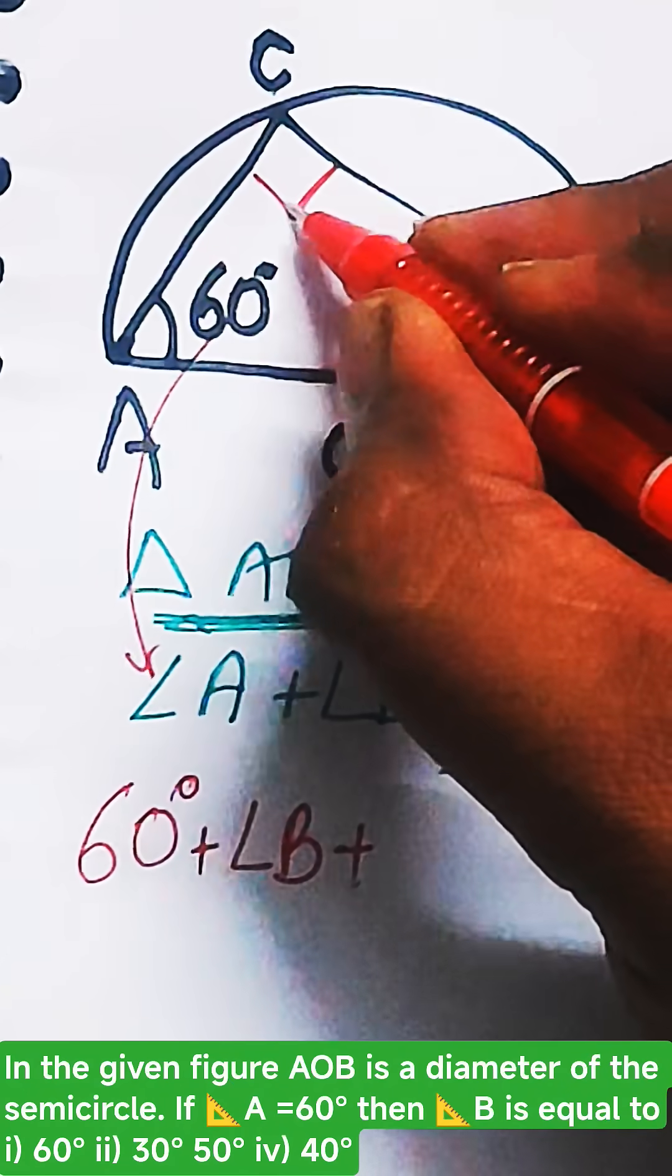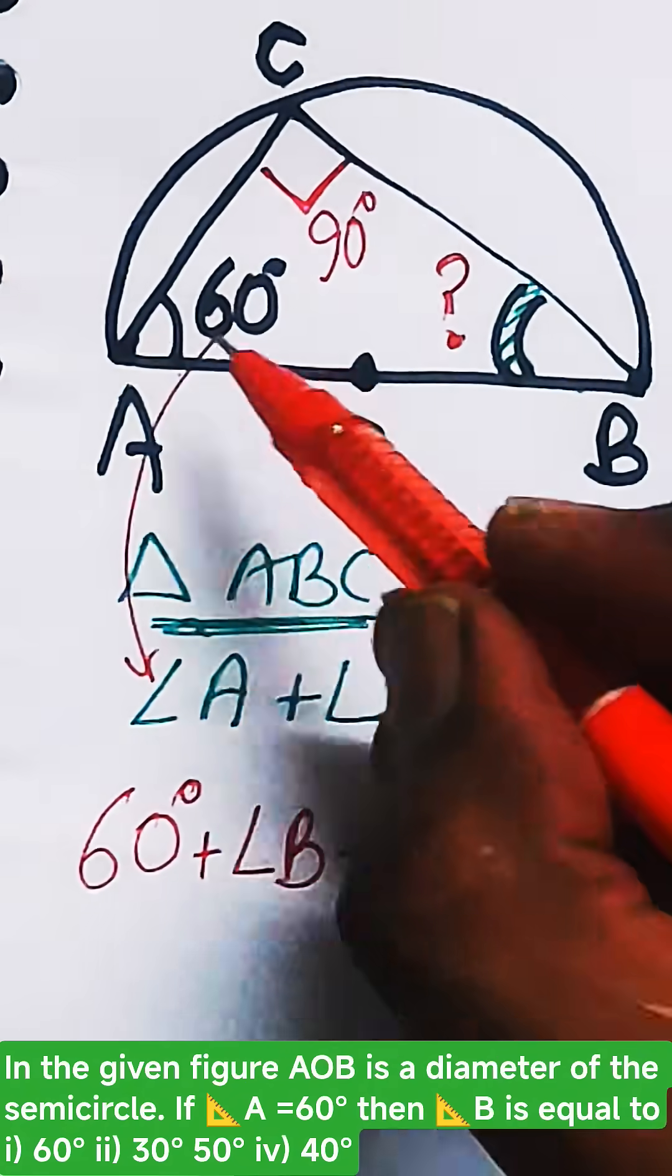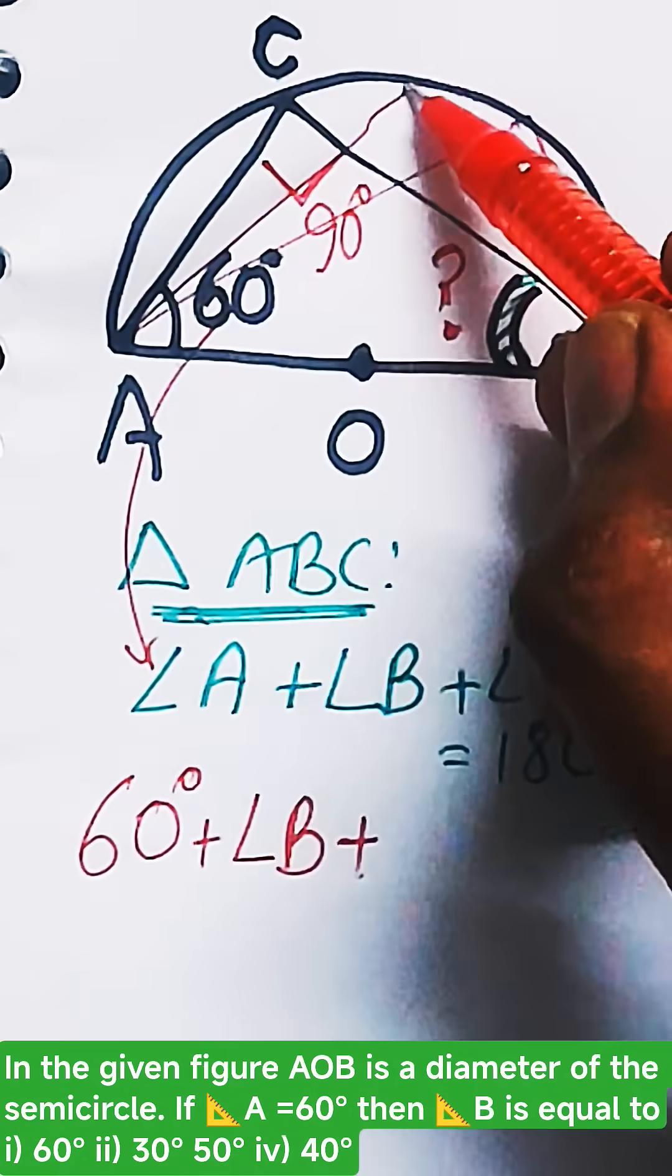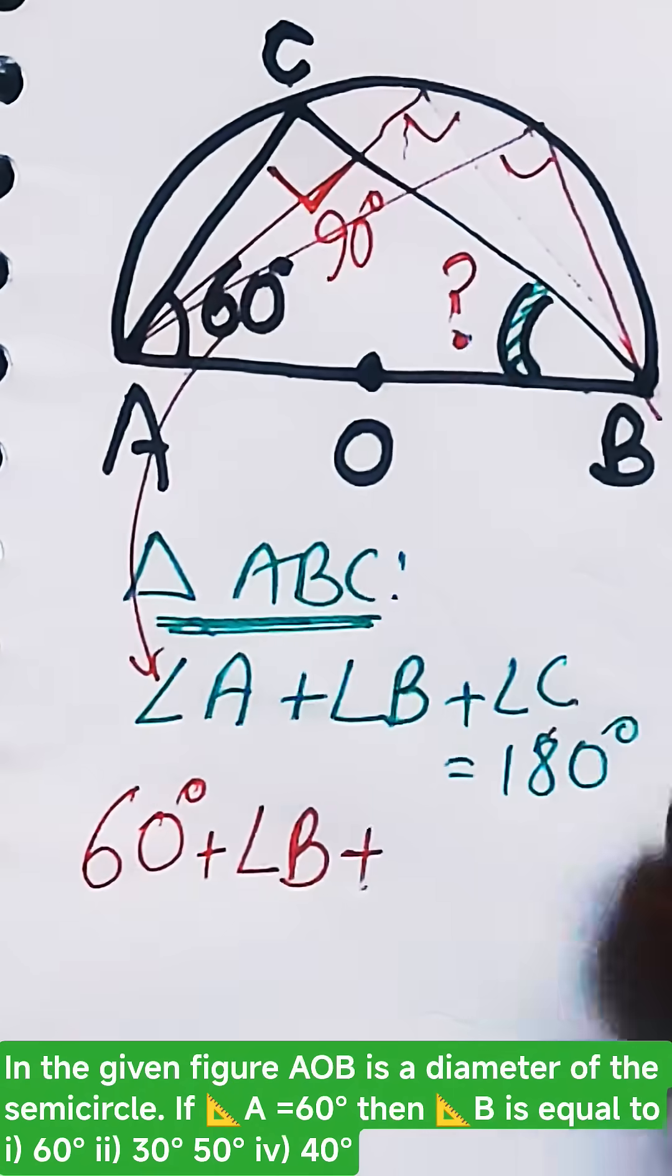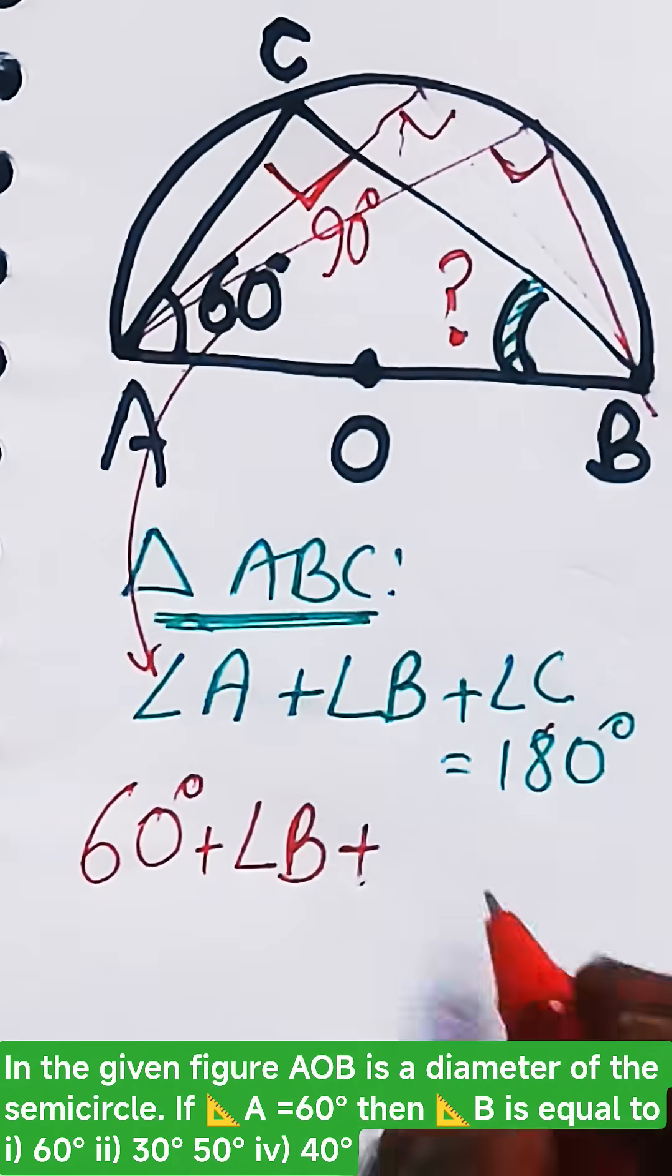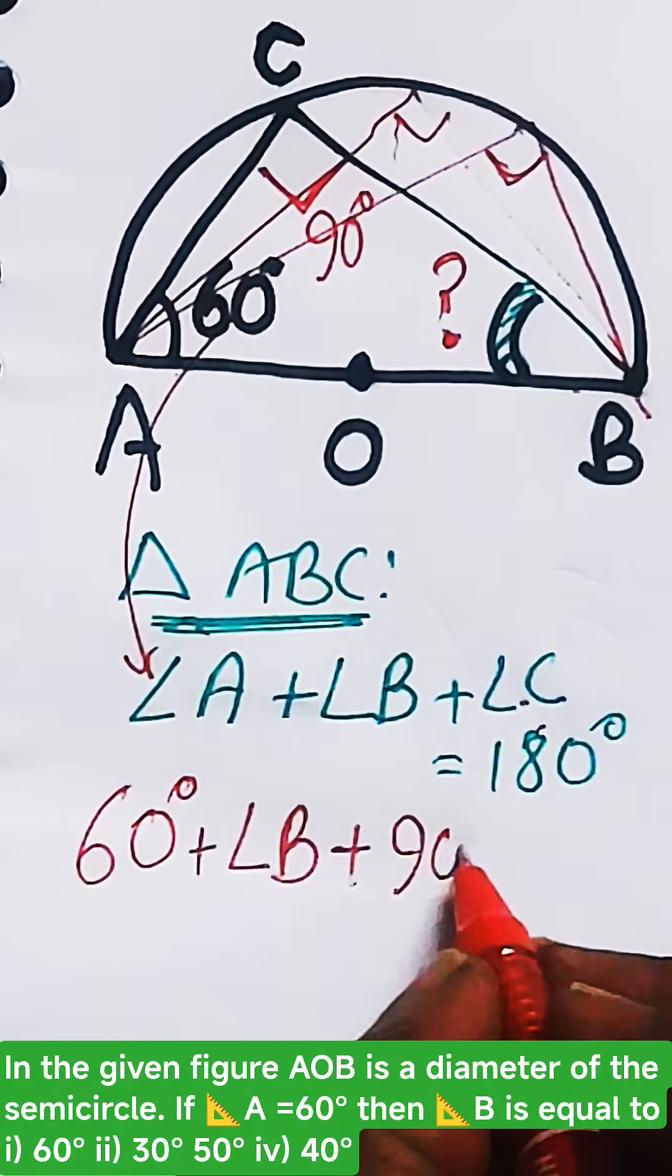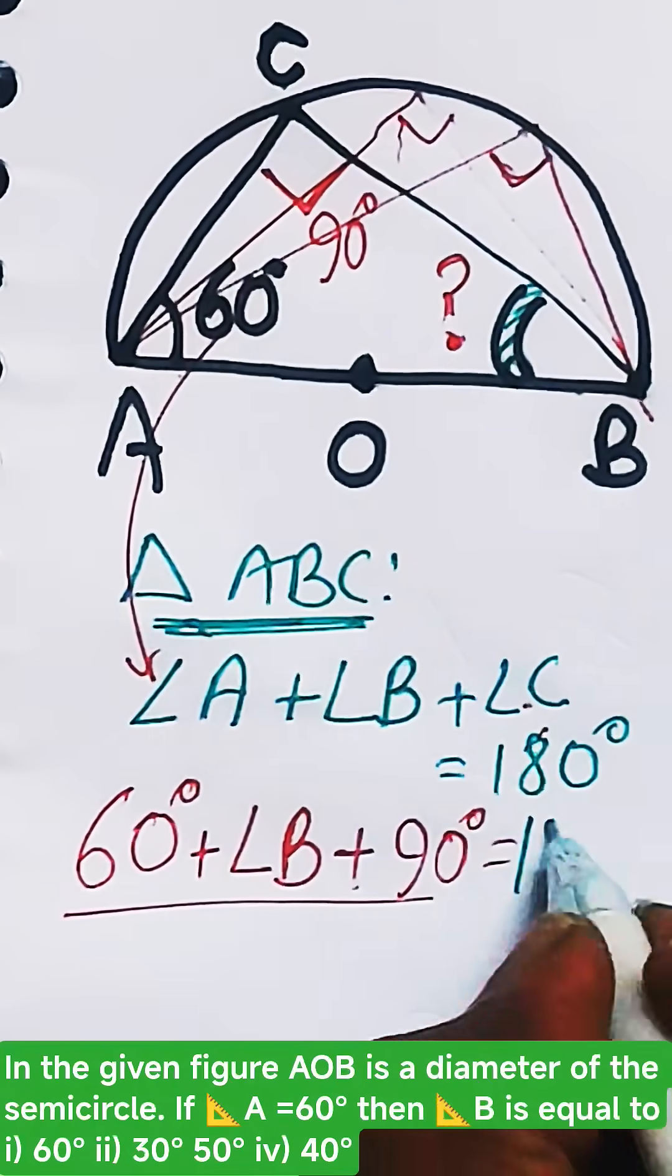Angle C will be 90 degrees because this is the angle in the semicircle. Any angle which is forming in the semicircle is equal to 90 degrees. So in place of angle C put a value of 90 degrees, and all this will add up to give you 180 degrees.